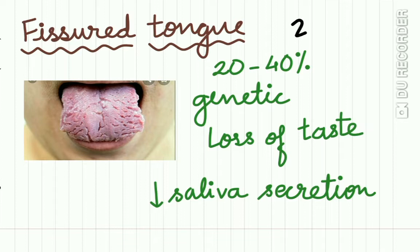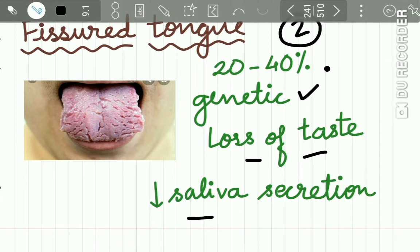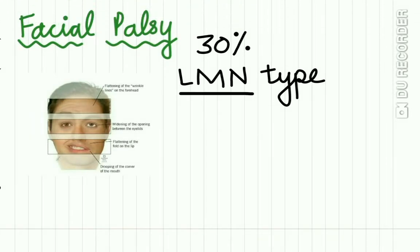The second feature, fissured tongue, is present in 20 to 40 percent of the population, with genetic susceptibility noted. There is also loss of taste and decreased salivary gland secretion. Facial palsy is reported in 30 percent of patients as a lower motor neuron type, which may be intermittent or permanent, unilateral or bilateral, and partial or complete.